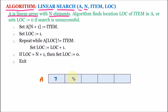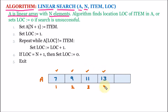Let's say 7, then 9, then 11, and 13 — so these are the four elements. In the algorithm, we are starting the index position from 1: positions 1, 2, 3, and 4. So N signifies the number of elements, and we can see that four elements are there — 7, 9, 11, and 13 — so the value of N is 4.